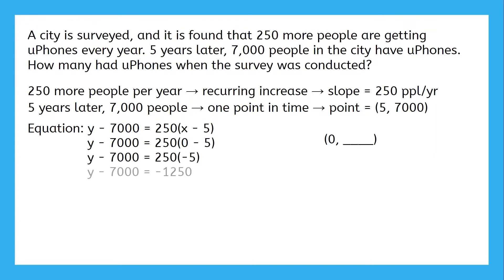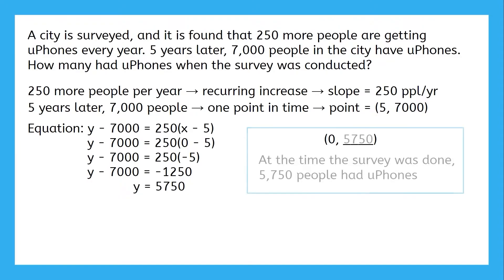Zero minus five is negative five. Negative five times 250 is negative 1250. Add 7000 to both sides and we get our answer: at the time the survey was done, five thousand seven hundred and fifty people had uPhones.